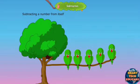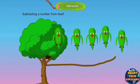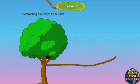There are 5 birds. All the 5 birds flew away. There are no birds left. 5 minus 5 is 0.